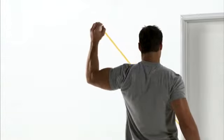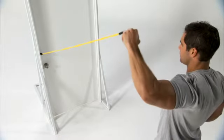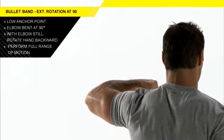When choosing a resistance level, either step backward away from the anchor point or closer to it. The further back you stand, the stiffer the resistance will be on the band. Make sure you can get through full range of motion.